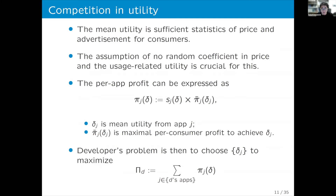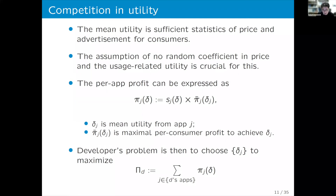We can transform the model of competition in price and advertisement into an equivalent model of competition in utility. The mean utility delta is a sufficient statistic of price and advertisement for consumers — due to the assumption of no random coefficients in price and usage-related utility. Interaction with consumers and competitors only occurs through the choice of delta. Therefore, we can calculate the optimal combination of price and advertisement for a given delta, and consider profit as a function of delta.